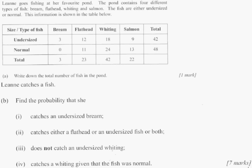Leanne goes fishing at our favorite pond. The pond contains four different types of fish: bream, flathead, whiting, and salmon. The fish are either undersized or normal. The information is shown in the table below — they break out all the undersized, normal, and the type.